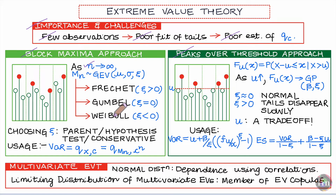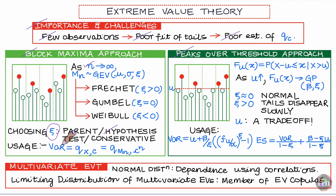For financial variables, only the Fréchet and Gumbel distributions are of practical interest. The choice depends on the value of the tail index: if the parent distribution is fat-tailed, work with the Fréchet; if light-tailed, work with the Gumbel. You can also perform a hypothesis test on the estimated tail index to decide. If you want to be conservative in your VAR and ES estimates, work with the Fréchet distribution, as it gives much more conservative estimates.